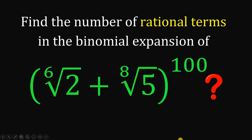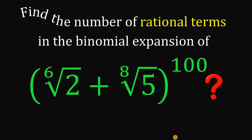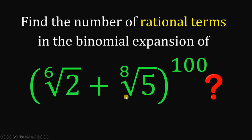Can you solve this math challenge given by one of our followers? Here's the question: find the number of rational terms in the binomial expansion of ⁶√2 plus ⁸√5, raised to 100. By the way, rational terms are the terms that do not contain any radical sign. You can pause this video if you want to give this problem a try.